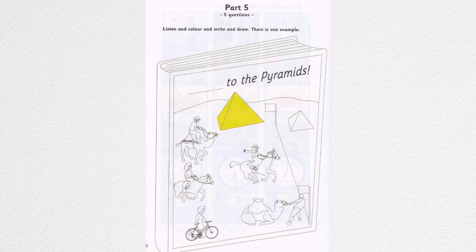4. Now, can you see the flag? The one next to the camel? No, the one between the pyramids. Okay. Colour it green.